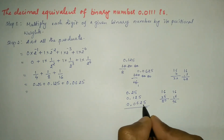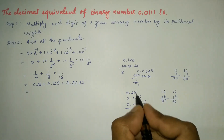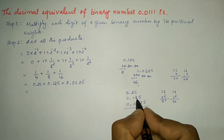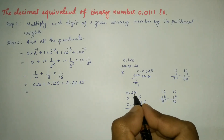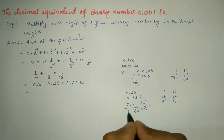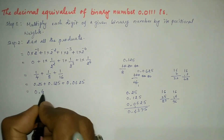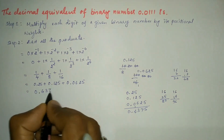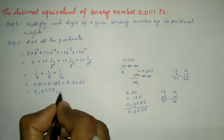Now add all the fractions: 0.25 plus 0.125 plus 0.0625. Adding these gives 0.4375. So the decimal equivalent of binary 0.0111 is 0.4375 to the base 10.